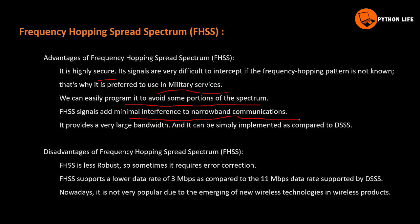FHSS provides very large bandwidth and can simply be implemented as compared to DSSS. Disadvantages: it is less robust and sometimes requires error correction. FHSS supports a lower data rate of 3 Mbps as compared to the higher data rate supported by DSSS, which stands for Direct Sequence Spread Spectrum.